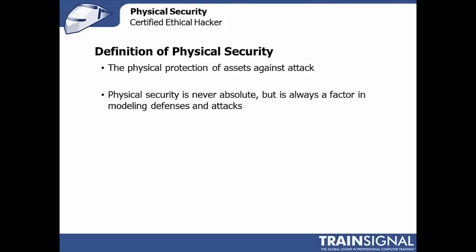More importantly than the different types, at the beginning, is to understand that physical security is never absolute. There is no scenario in which physical security is perfect and absolute. Even in government installations and high-security scenarios, it's exceptionally hard to provide absolute physical security unless the asset is completely unusable — locked in a safe, completely inaccessible to human beings or any kind of data access. That's the kind of physical security that would be absolute.